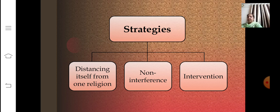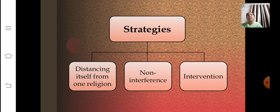The Indian state works in various ways to prevent the above domination. The strategies adopted by the Indian state are: first, distancing itself from religion; second, non-interference; and third, intervention. We are going to understand these strategies in detail.